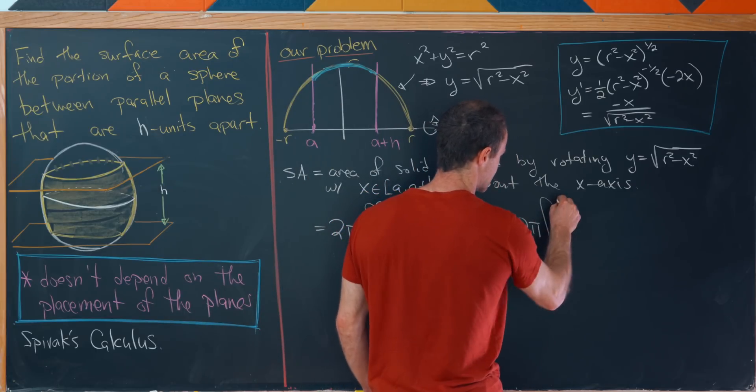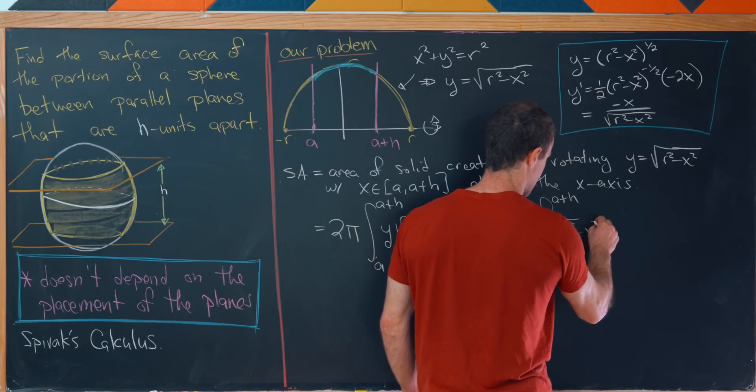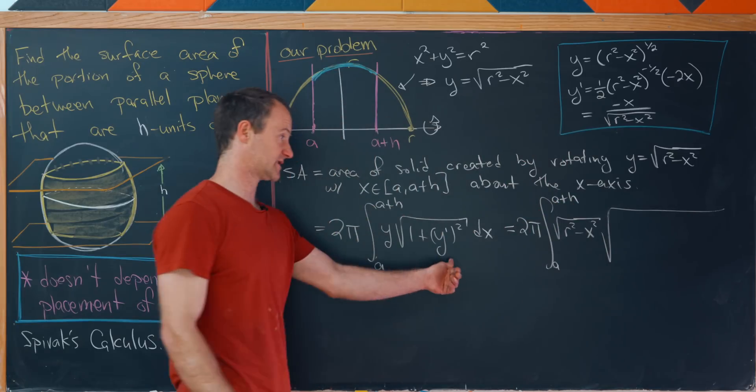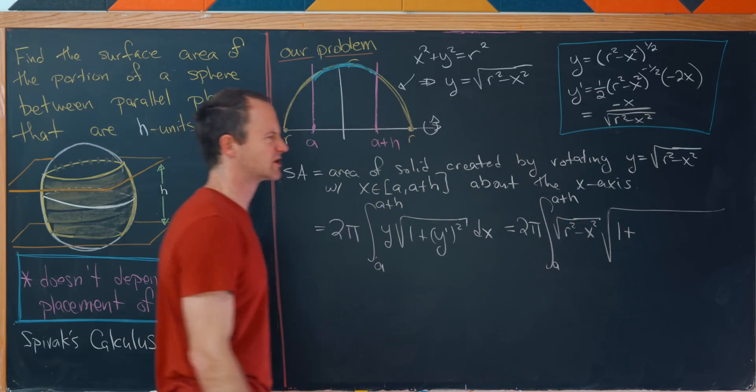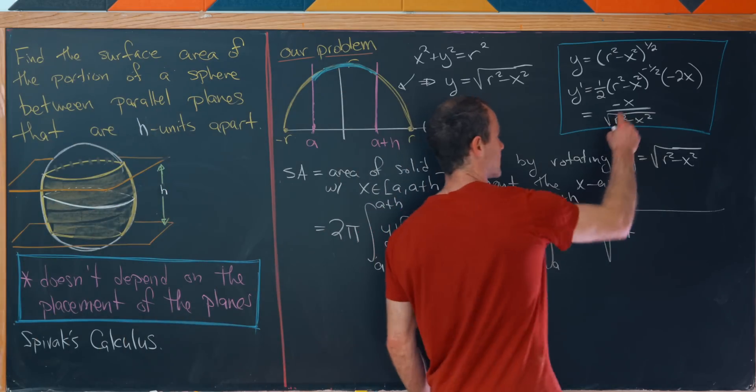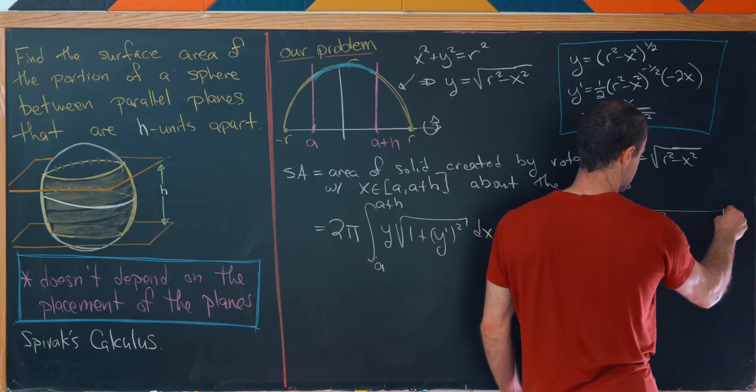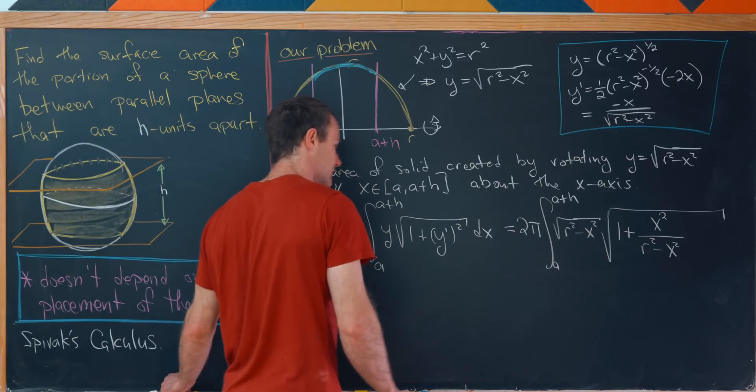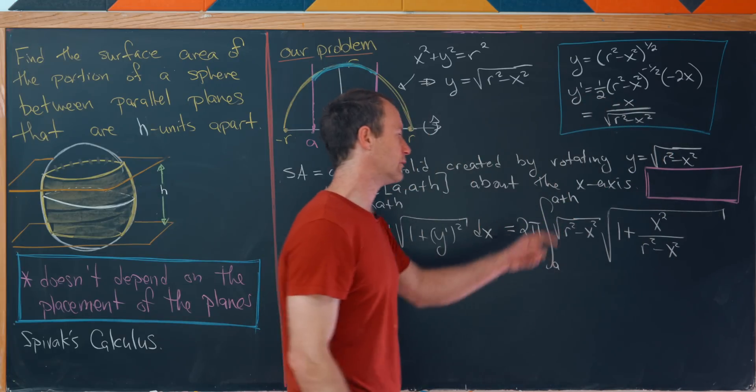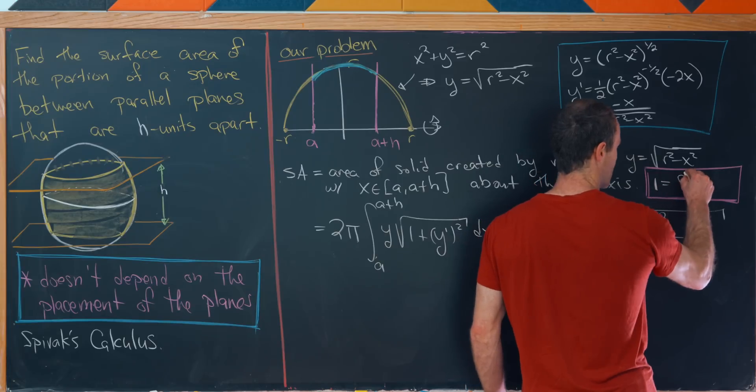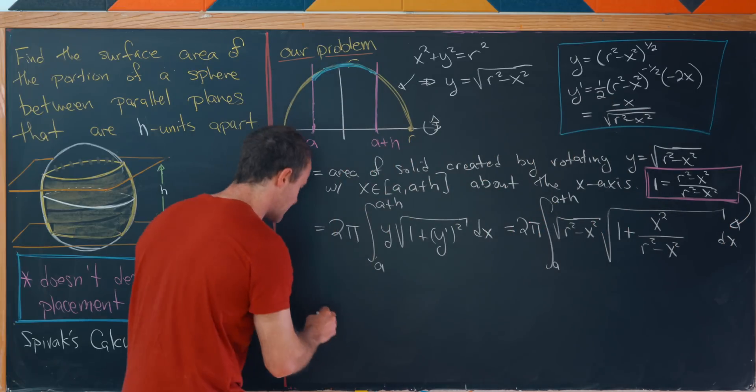So let's see what we have. We have 2 pi, the integral from a to a plus h. We'll have y, but I'll rewrite that as the square root of r squared minus x squared. And then we'll have the square root of this. And let's do the calculation. This is 1 plus this function squared, this minus x over the square root of that stuff squared. So squaring it will cancel out the minus sign, leaving us with x squared over r squared minus x squared. But now let's maybe keep in mind that we should perhaps simplify what's going on in the radical before we get ahead of ourselves. And we can rewrite 1 as r squared minus x squared over r squared minus x squared for this simplification.